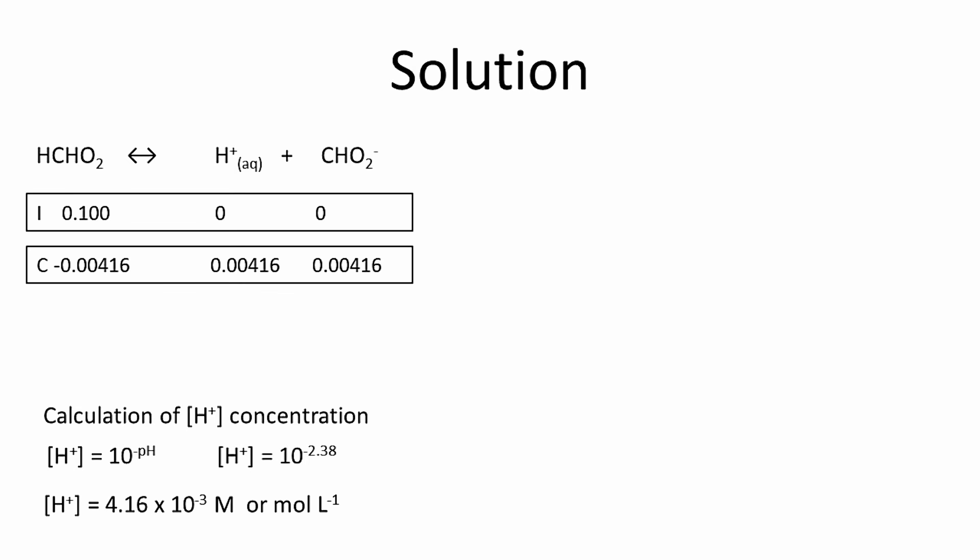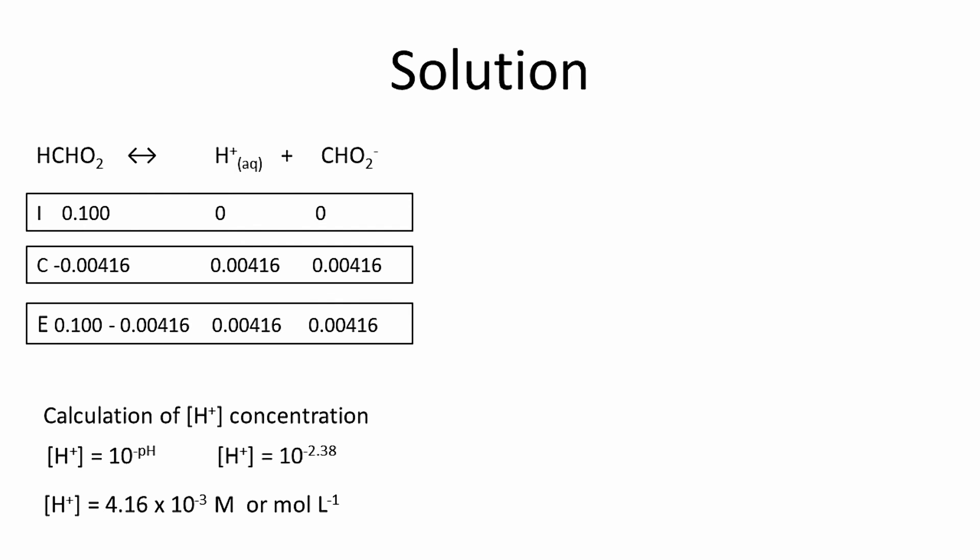At the same time there is an increase in concentration of hydrogen ions, so positive 0.00416 appears beneath the hydrogen ion concentration, and the same number beneath the formate ion CHO2⁻ concentration. If you have the initial concentration and the moles of hydrogen ions formed, you can find the moles of undissociated formic acid, which is the equilibrium concentration row.